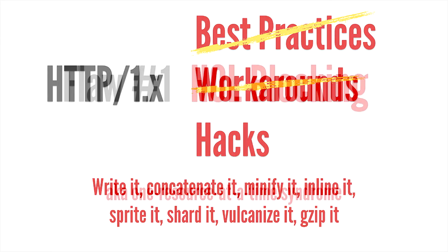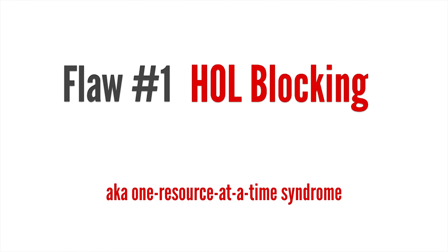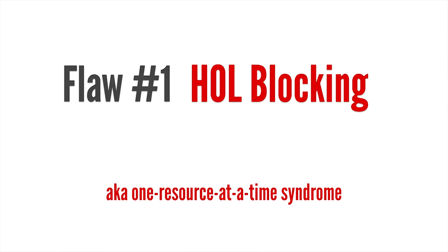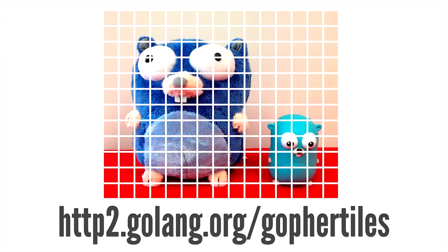This ultimately leads us to flaw number one: head-of-line blocking. Imagine that you have 10 letters to submit to the post office. Every time you submit a letter, a new connection is created and someone needs to handle your letter for shipping. Now imagine that the post office can only handle a maximum of six letters per person. If you submitted all 10 letters together, the post office will take the first six and the other four will have to wait until an open spot is available. In this example, the post office is the server that handles requests, and the letter is the request itself. This issue has been resolved in HTTP2.